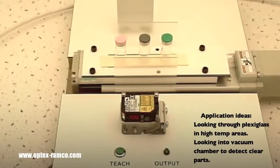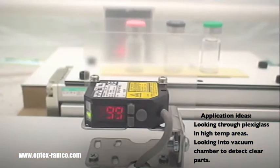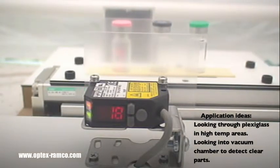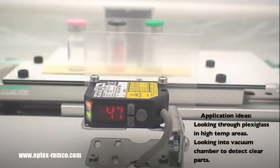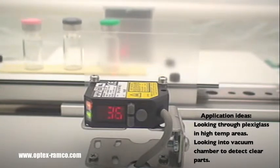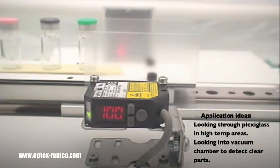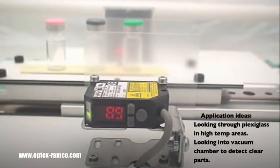One application idea where you can take advantage of the DRQ's ability would be a situation where you want to mount the sensor behind some plexiglass material, say in a hot area, and detect transparent material in front of the plexiglass.